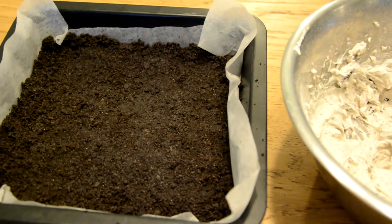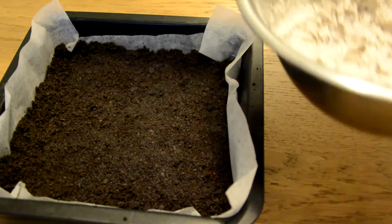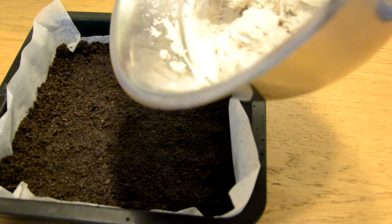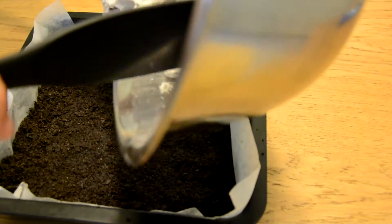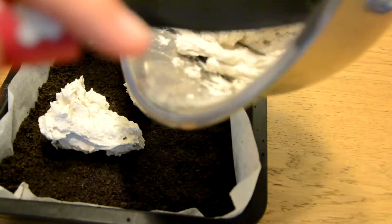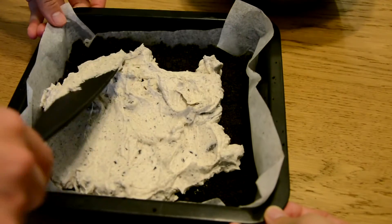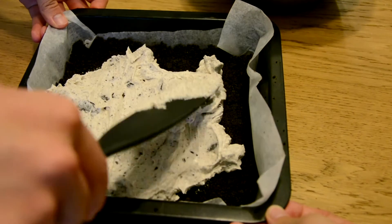Once your crust is chilled and firm, you want to take that out of the fridge and spread your mixture over the top of the crust. Make sure you spread it evenly all over the crust so there are no uneven bits.